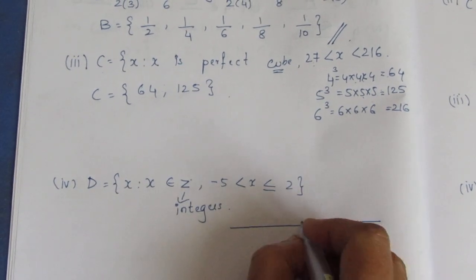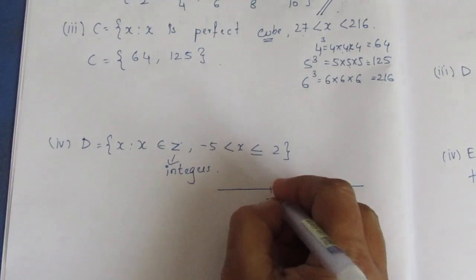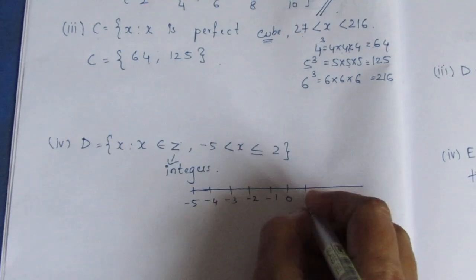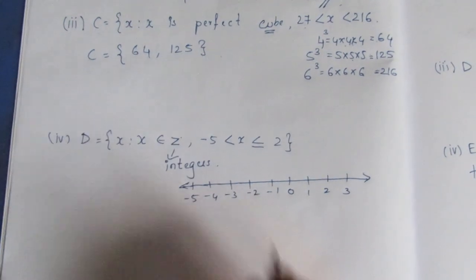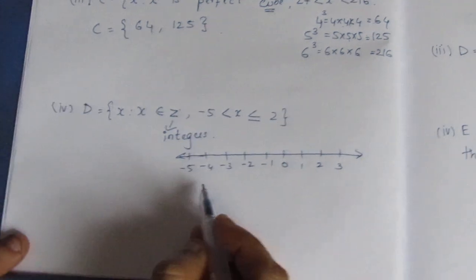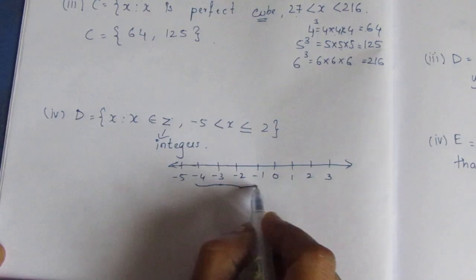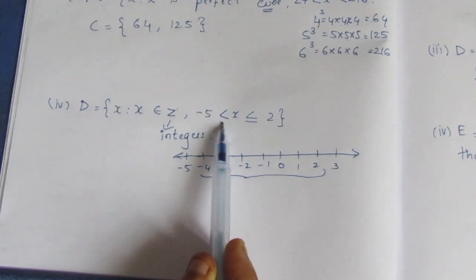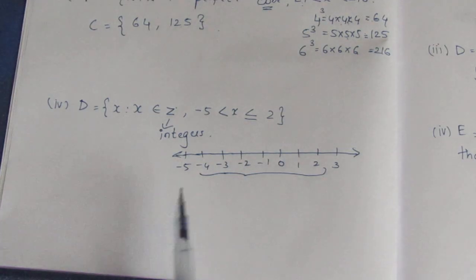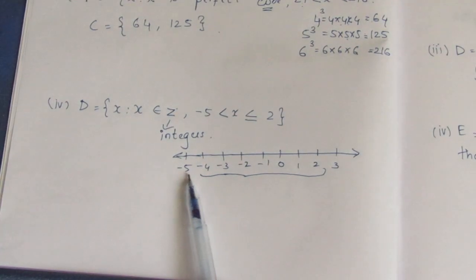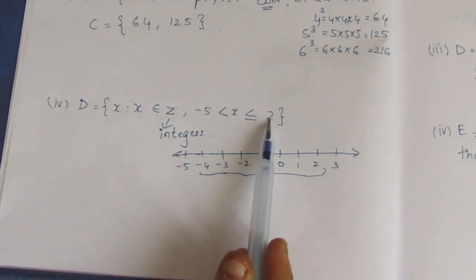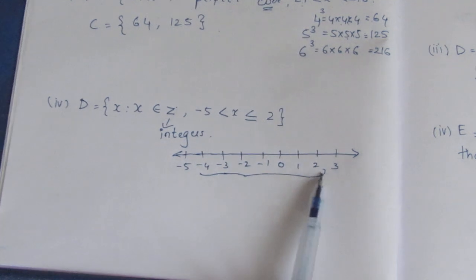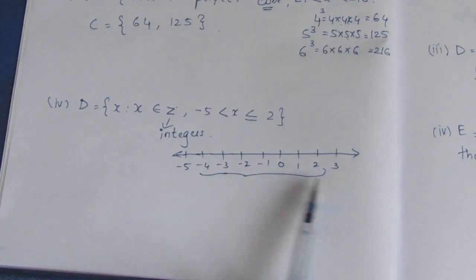If we put the number line, it will be easier. Looking at the number line: minus 1, minus 2, minus 3, minus 4, minus 5 on the left and 1, 2, 3 on the right. Greater than minus 5 means we look to the right of minus 5. The number of minus 4 is greater than minus 5. So x is greater than minus 5 and less than or equal to 2.